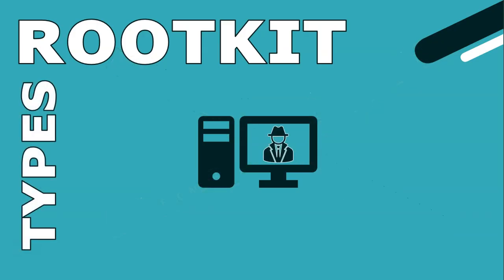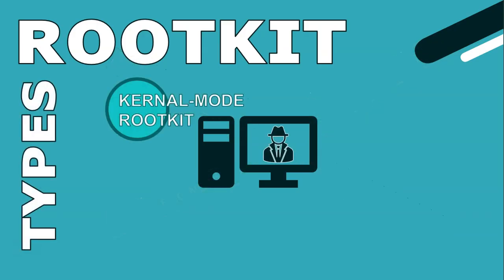There are many types of rootkits. Kernel mode rootkits modify the core components of the operating system — known as the kernel — to gain control over the system.